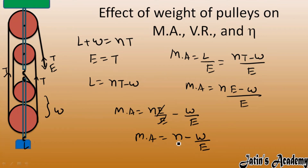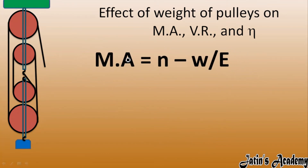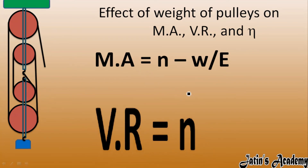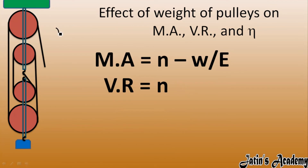So the mechanical advantage formula when considering pulley weight is MA = n - W/E, where W is the weight of the movable pulleys and E is the effort. As for velocity ratio: even when considering the effect of pulley weight, the displacement of load and effort does not change, so velocity ratio remains the same — VR = n for n number of pulleys.